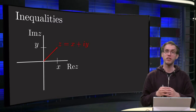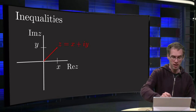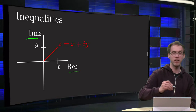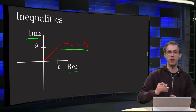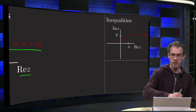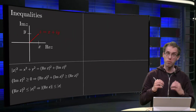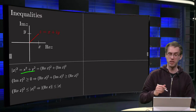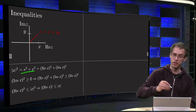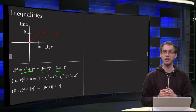We have the usual picture of our complex number z equals x plus iy in the complex plane, x on the real axis, y on the imaginary axis. We know that the norm of z squared equals x squared plus y squared, or since x equals the real part of z: the real part of z squared plus the imaginary part of z squared.